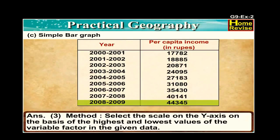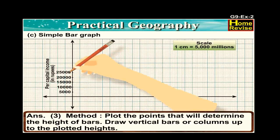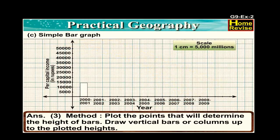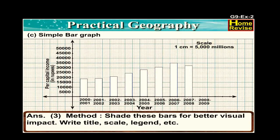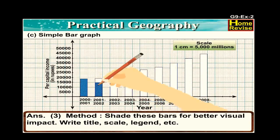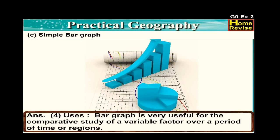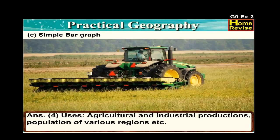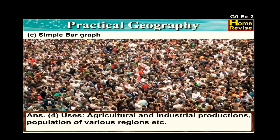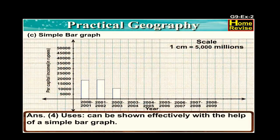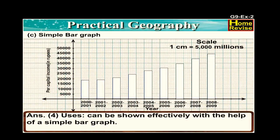Method: select the scale on the y-axis based on the highest and lowest value of the variable in the given data. Plot the points that will determine the height of the bars. Draw vertical bars or columns up to the plotted height and shade them for better visual impact. Write the title, scale, and legend. Uses: a bar graph is very useful for the comparative study of a variable factor over a period of time or across regions. Agricultural and industrial productions, population of various regions, etc., can be shown effectively with a simple bar graph.